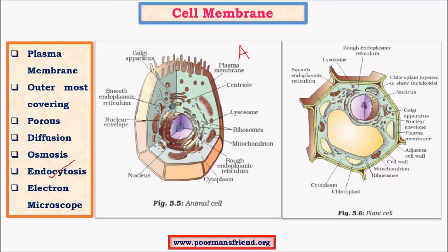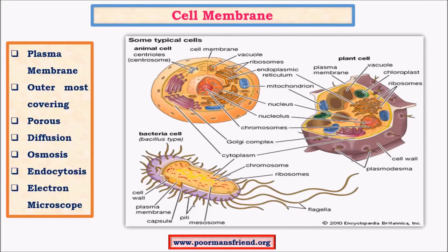The plasma membrane is so thin that it can be observed only through an electron microscope, not visible under ordinary sensitive microscopes. Whereas other cell organelles, being comparatively larger, are visible with certain kinds of sensitive microscopes. Cell membrane is different for plant cells and the cells of bacteria and algae, which are called prokaryotic cells. Prokaryotic cells have a less developed plasma membrane.